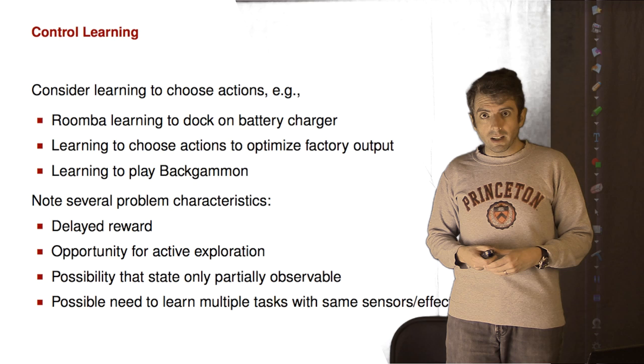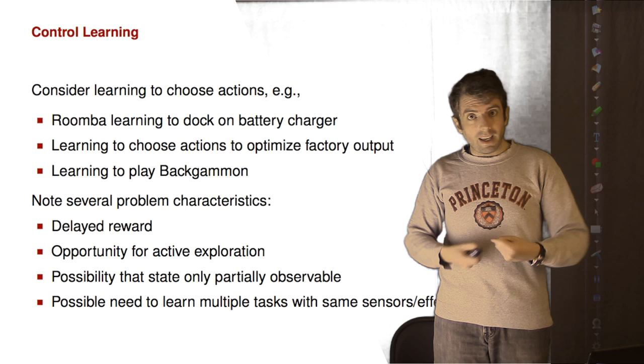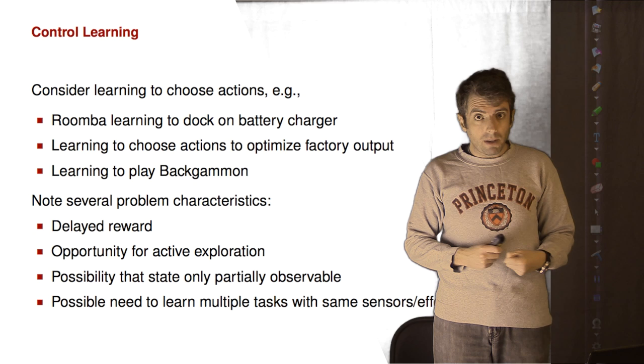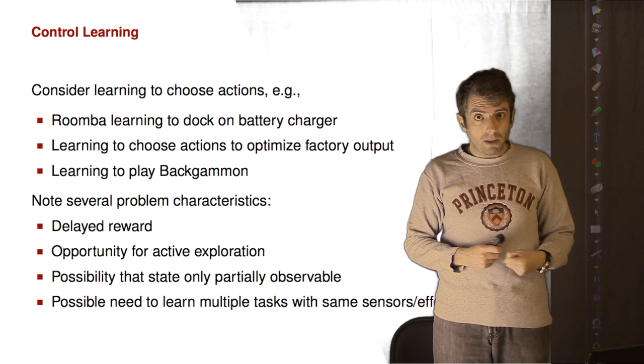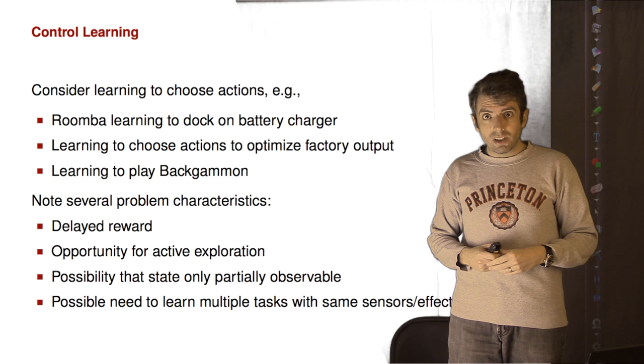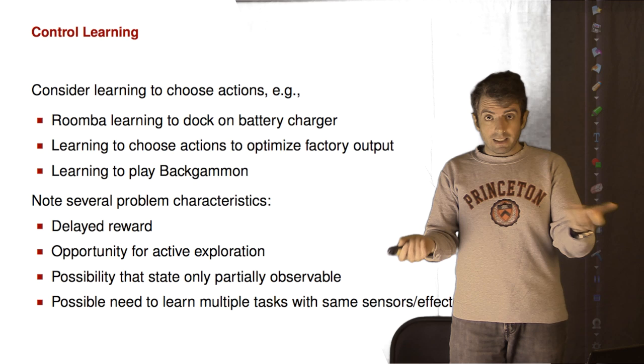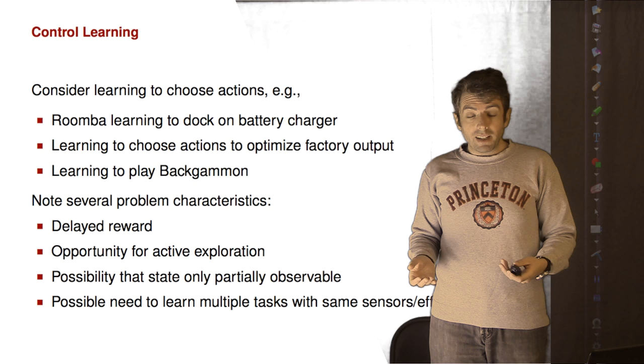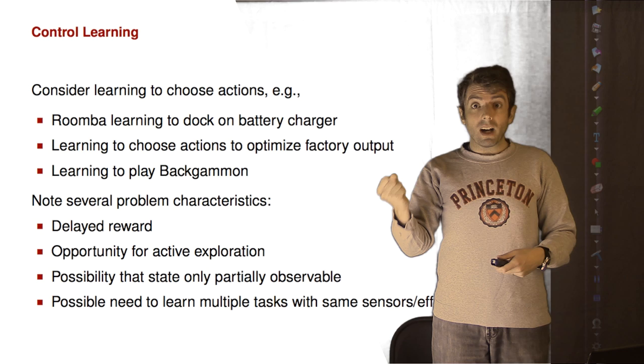The kinds of situations where you can use reinforcement learning are when you have an agent that's interacting with the world somehow. This could be a Roomba, a robot that's trying to figure out its way through the house to get the house as clean as possible, and then to find its way back to its home. It could be a factory trying to figure out what is the best way to assemble a product and get it out the door as fast and as cheap as possible. Or it could be someone playing a game where the moves that you make in a game, like in backgammon, change the moves that your opponent will make.